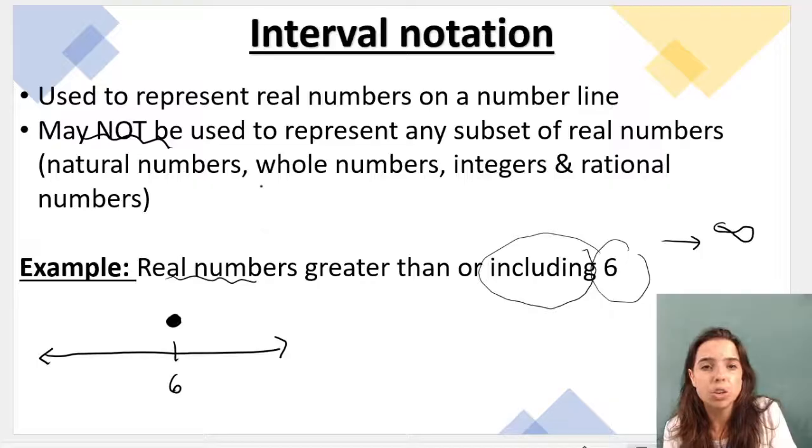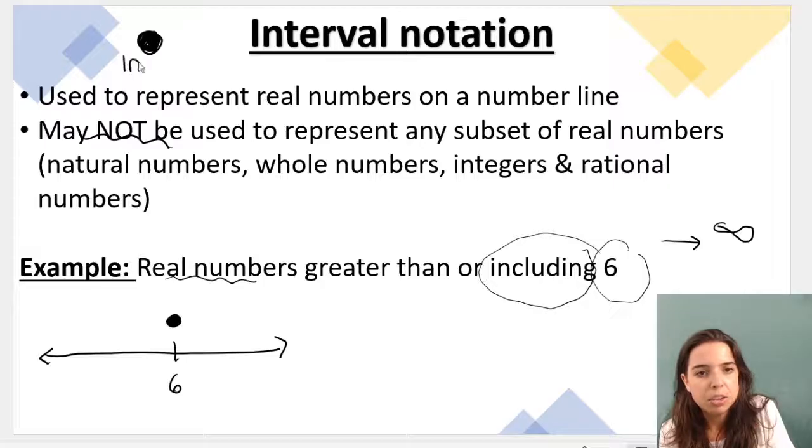So a dot that is colored in, and now I'm going to do a bad job of coloring in, but it's okay, that is including. In other words, including that value. And an empty dot like that means excluding.